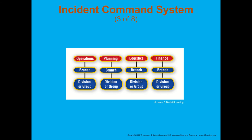Here's an example of some of the different branches of the command system: operations, planning, logistics, and finance. Underneath those branches are divisions or groups. This is a way to use span of control to achieve our goals. If you're working under the operations branch, you may be assigned to a certain division or group — for example, you may be working under the EMS operations branch and be the triage group. That's kind of how that process flows, and those are repeatable amongst all the different branches and sections.